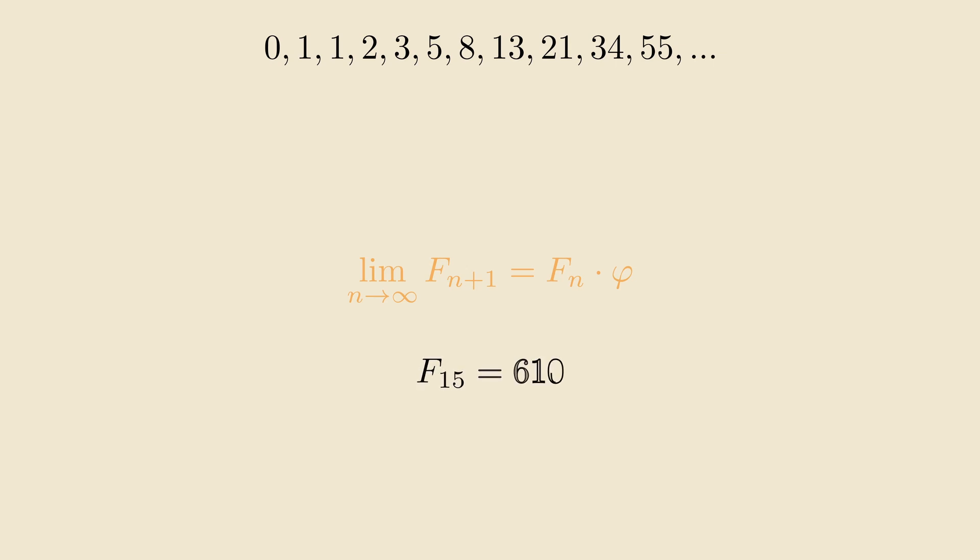That means, for large n, we can calculate the next Fibonacci number by simply multiplying by the golden ratio. And you'll see, for F16, this approximation is very accurate.